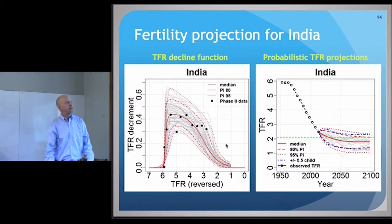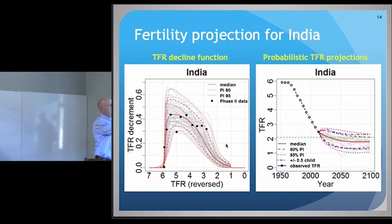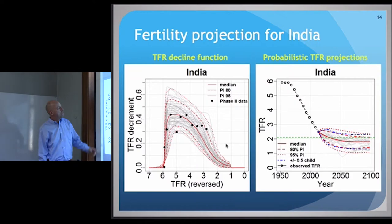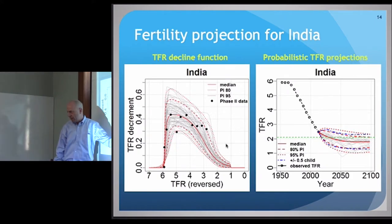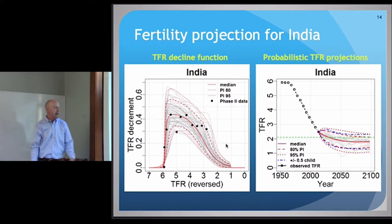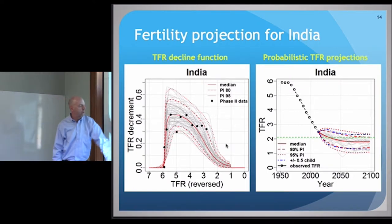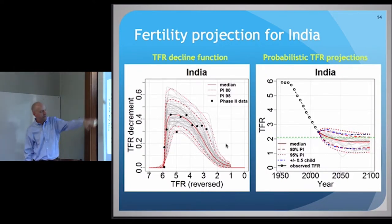This slide illustrates how the model actually works for India during phase two of the fertility decline. The black dots are actual data points for five-year time intervals showing the rate of decline as a function of TFR level. The main point is that it has this inverted U-shape — already present in the data. For some countries you have the full range of data, for others you don't. India is cut off a bit at the end, so you borrow somewhat from other countries' experience to complete the estimation. The gray lines depict uncertainty in estimating this decline curve.